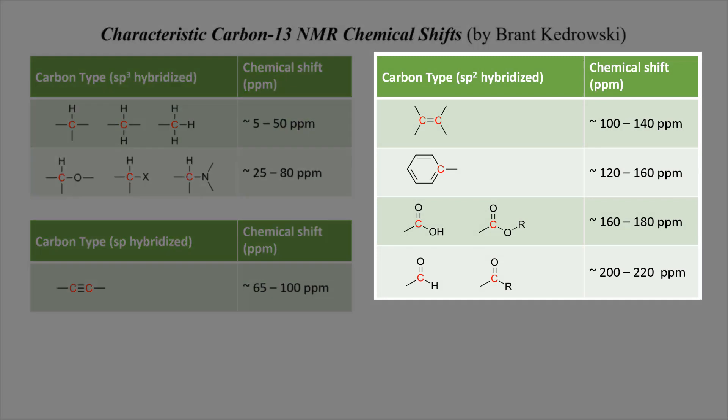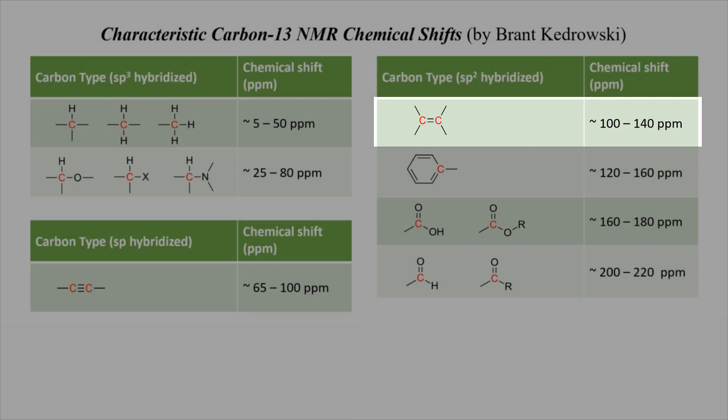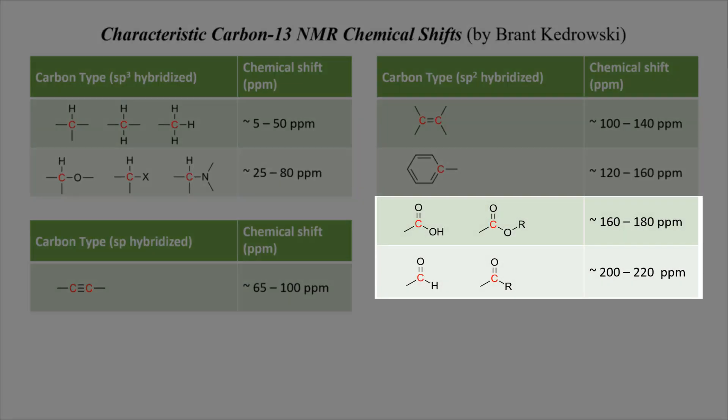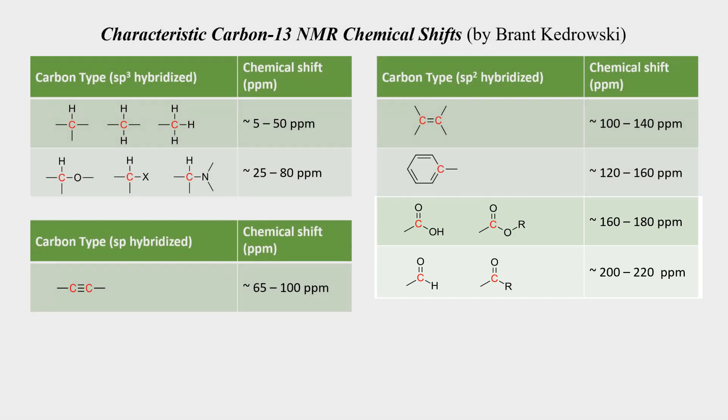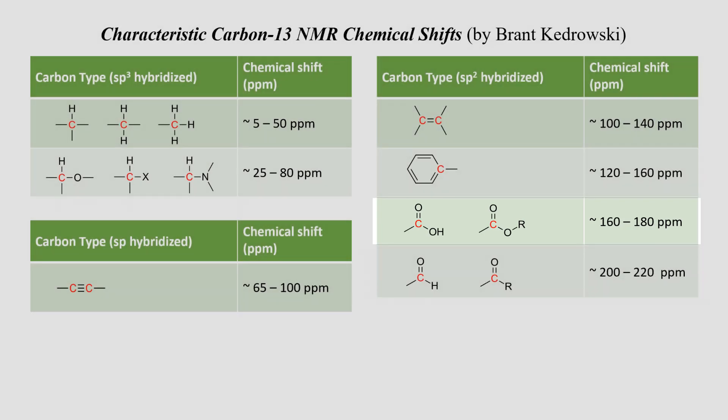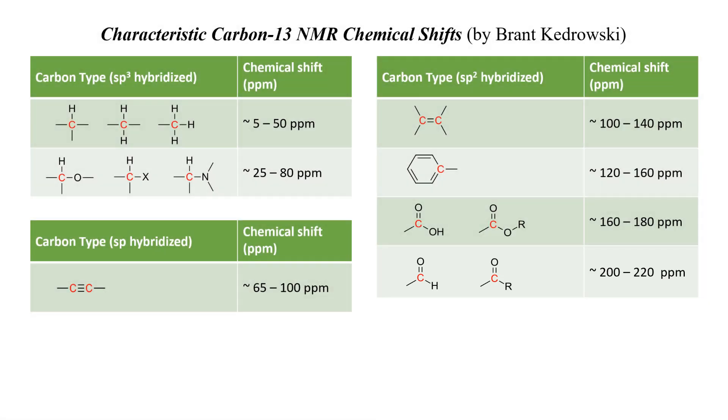And then we have the sp2 hybridized carbon types. Carbons of alkenes tend to show up at 100 to 140 parts per million. Carbons in aromatic rings, in benzene rings, tend to show up at 120 to 160 parts per million. The carbons of carbonyl groups are even further downfield. They're shifted to much higher chemical shifts. Esters and carboxylic acids are in the 160 to 180 region, while the carbons of aldehydes and ketones are the most deshielded and show up typically between 200 and 220 parts per million. Keep in mind that these chemical shift ranges are approximate, and that certain carbons can stray out of these ranges from time to time.